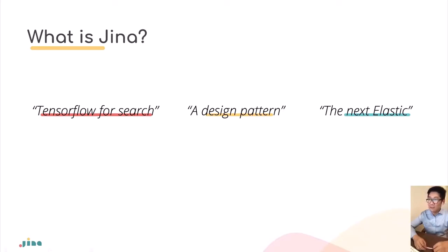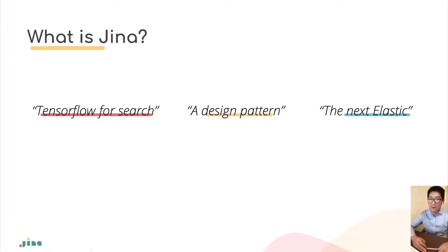The second way to explain GINA is as a design pattern. In the classic search system, there were design patterns like analyzing and tokenizing. For neural search, a new design pattern is needed. GINA provides that design pattern — not just a proof of concept, but something iterated over a couple of years. And our company positions itself as the next Elasticsearch.